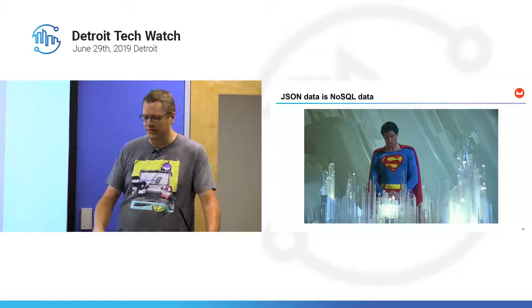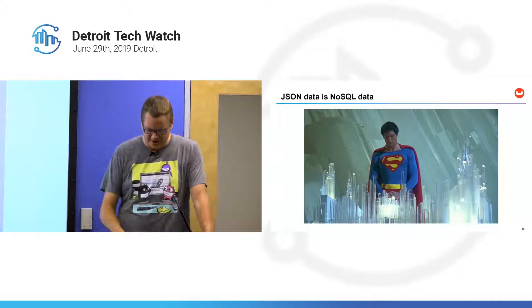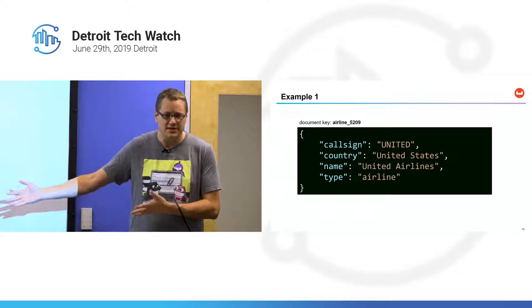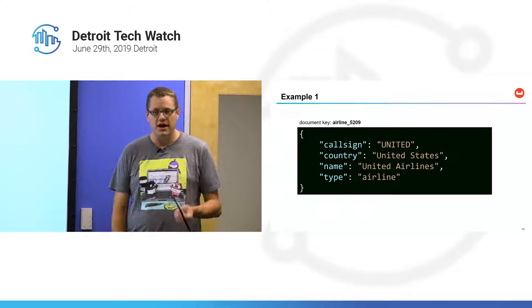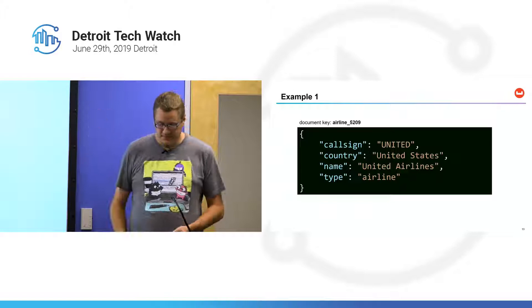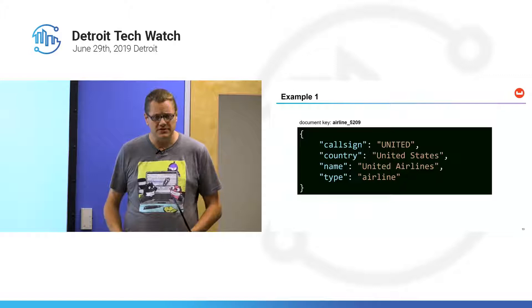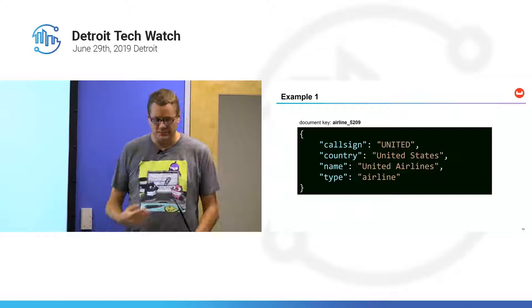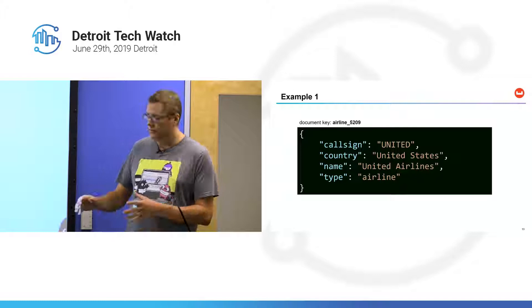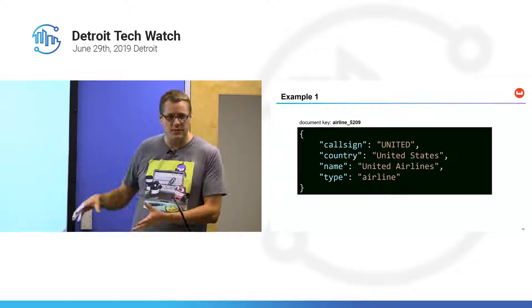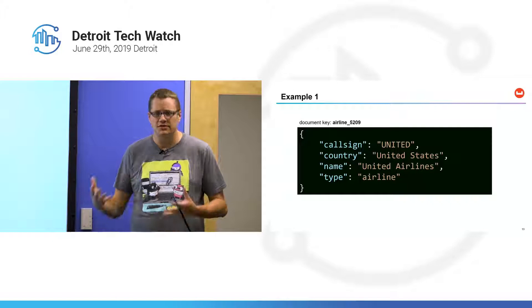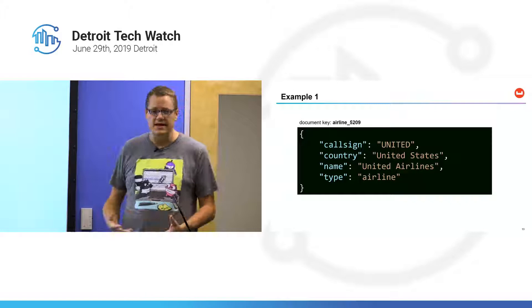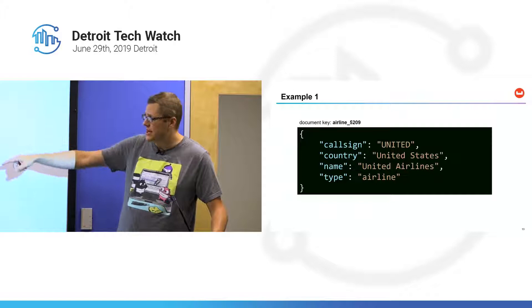Here's an example of a document — a piece of data in a NoSQL database. This is a very simple document representing an airline. The data is stored as JSON format and it has a key. The document key is important: in relational databases you have primary keys, but this is basically like a key-value store. I can look up documents by the key and make changes to a document if I know that key in advance.